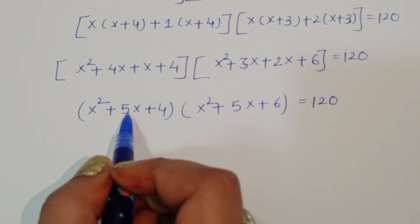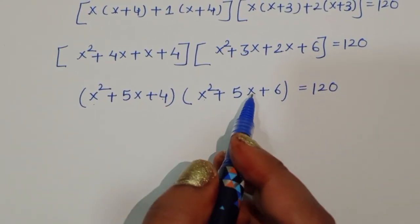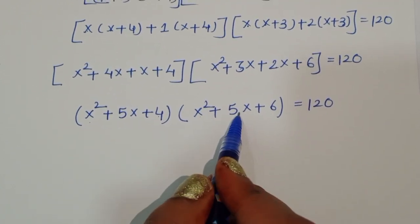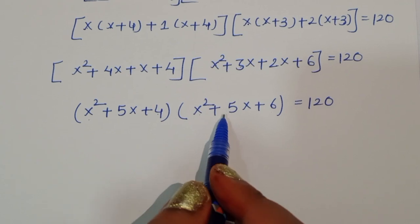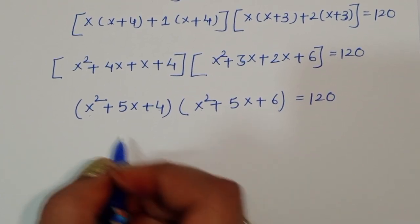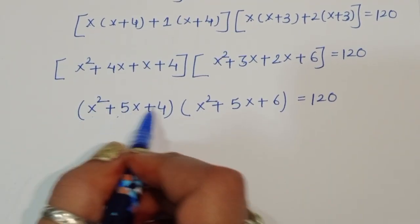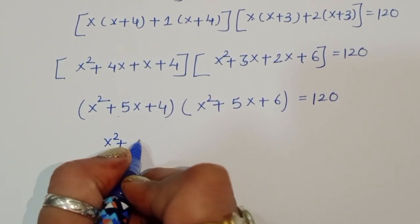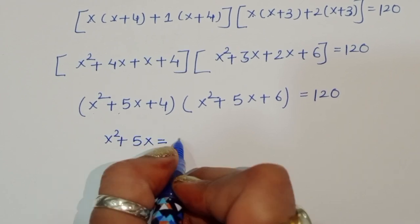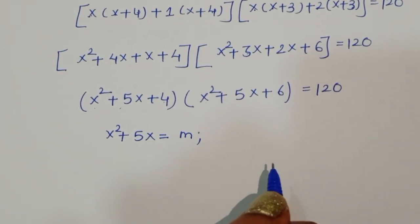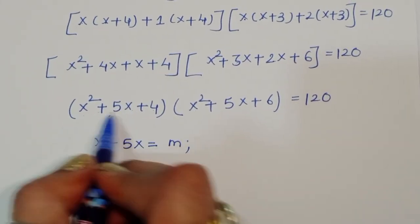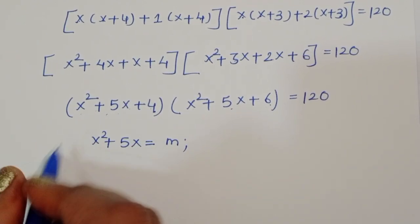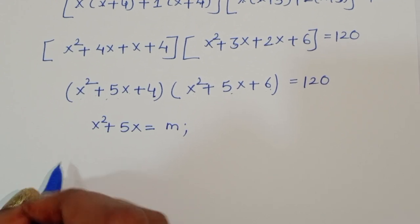Since x² + 5x is common in both brackets, let's substitute m = x² + 5x. Then the equation becomes (m + 4)(m + 6) = 120.